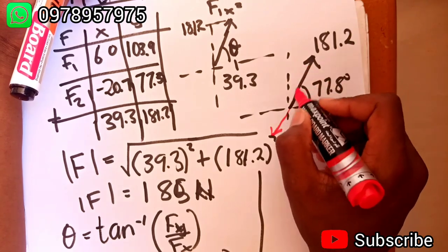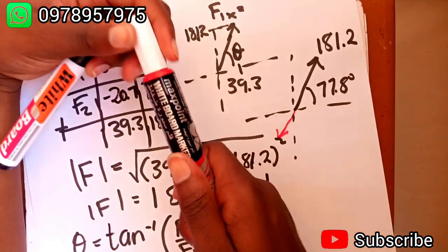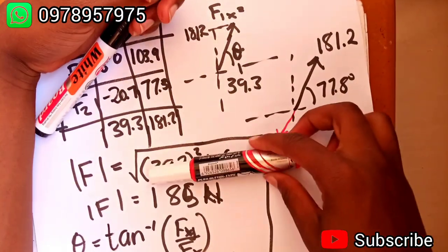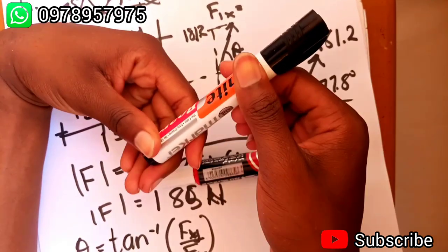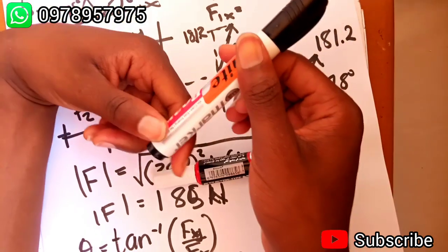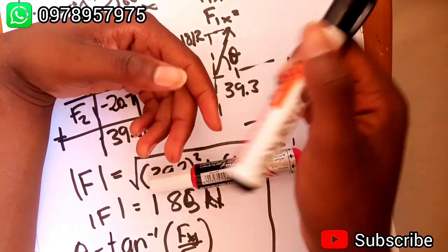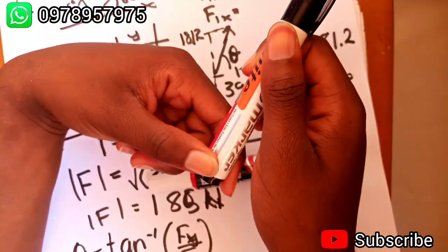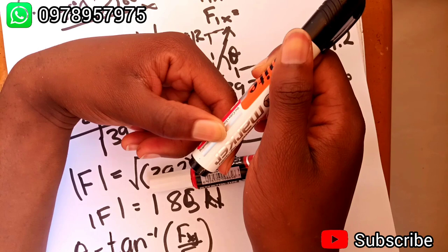It has to be equal and opposite. So the force has to come here like that and it has to be equal to this one in magnitude. The force has to be in a straight line. It's like when you're pulling, when I'm pulling this marker in this direction.